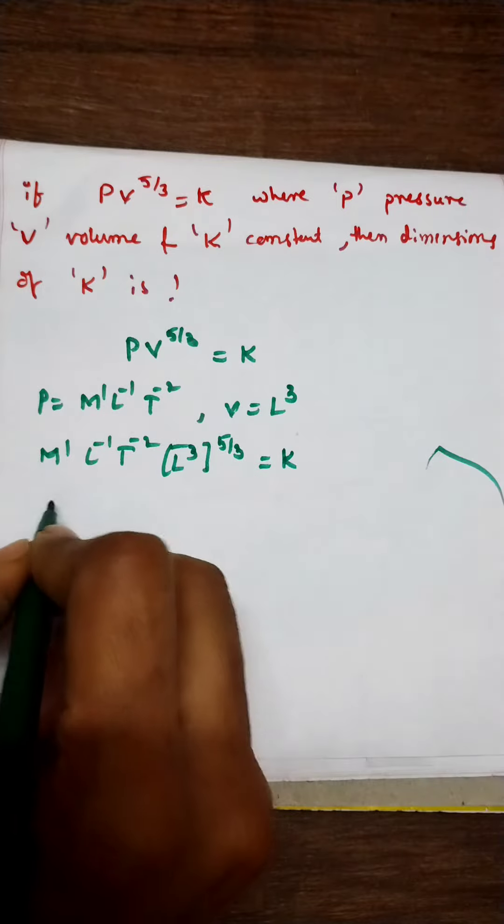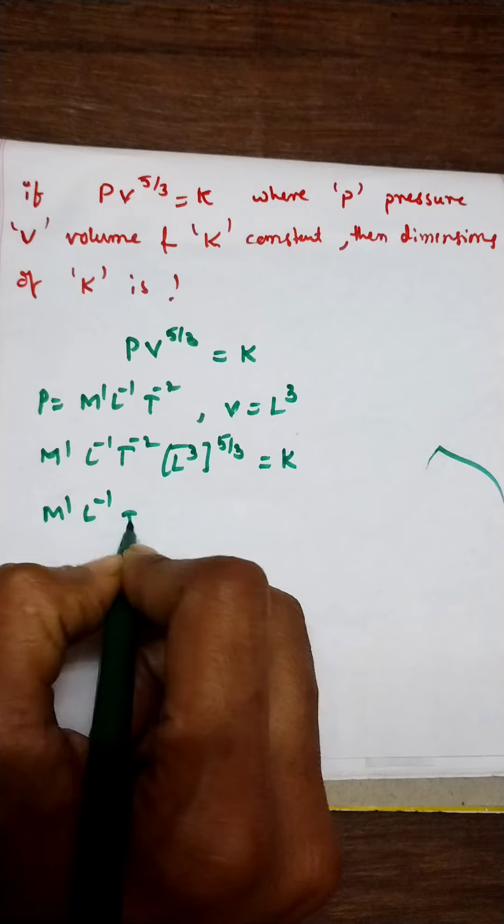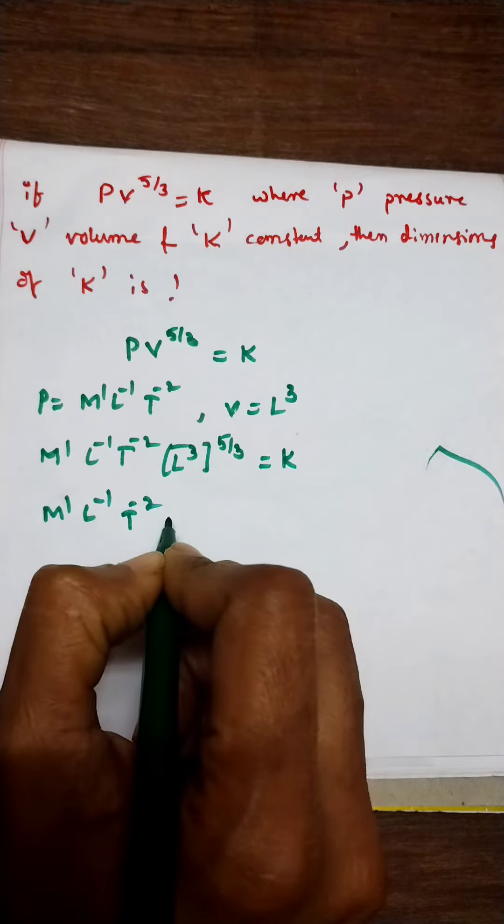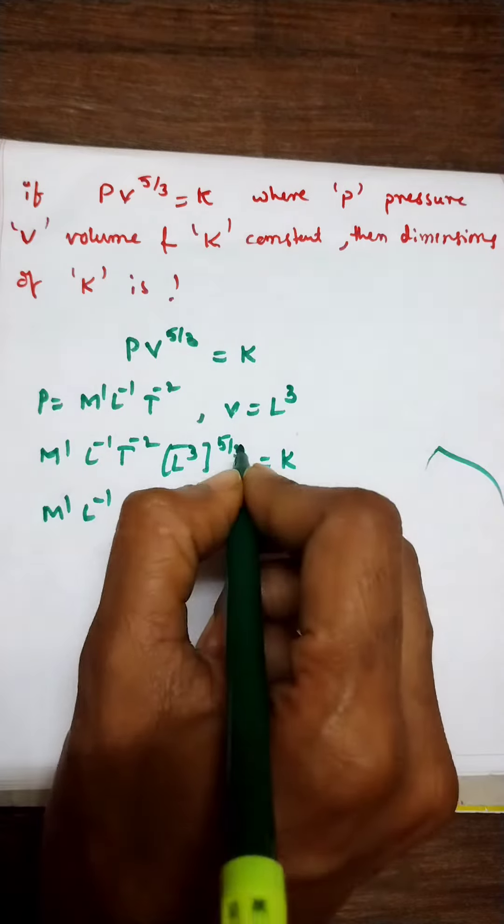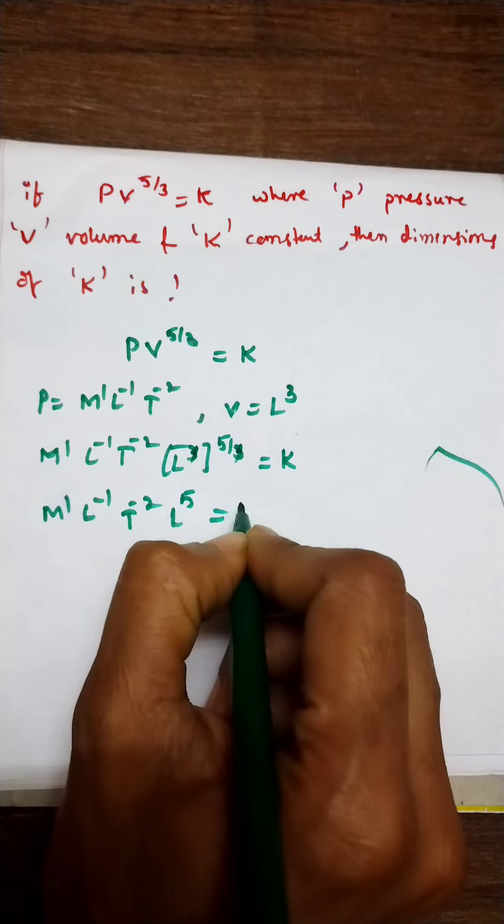So the equation becomes M power 1, L power minus 1, T power minus 2. The 3 will get cancelled in the above equation. Then remaining will be L power 5 equals K.